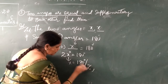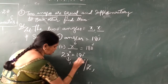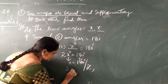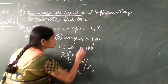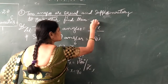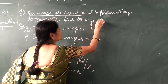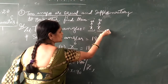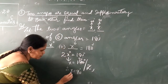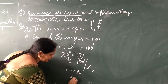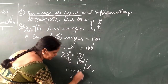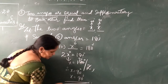Two divided into 180: two 1's are 2, two 9's are 18 — so 180 divided by 2 is 90. Therefore x is equal to 90 degrees. This angle is 90 degrees, and the next angle will also be 90 degrees, because they are both equal to each other. So x is equal to 90 and x is equal to 90.